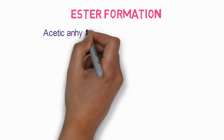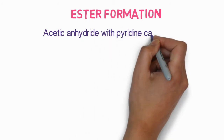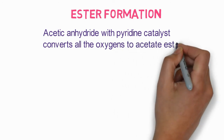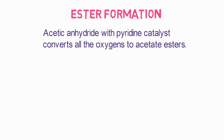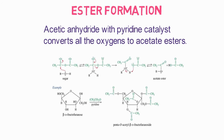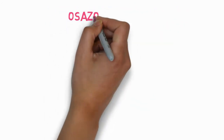The next reaction is ester formation. Esters are usually formed by acetic anhydride with a pyridine catalyst, which converts all hydroxyl oxygens to acetate esters. You can see here the furanose product is converted to methyl glycosides and an ester is formed.